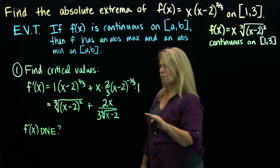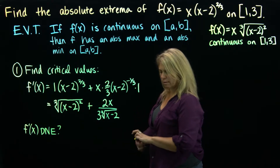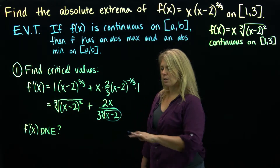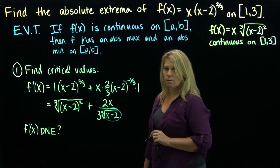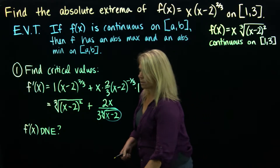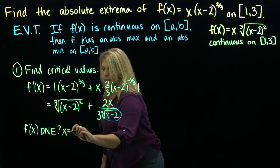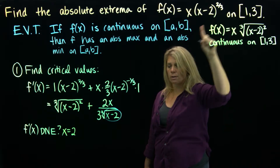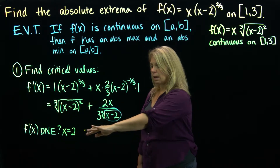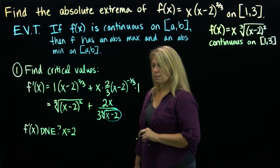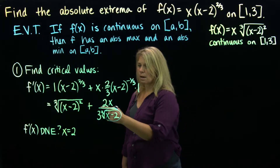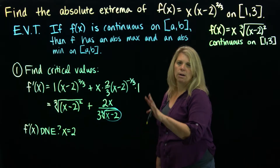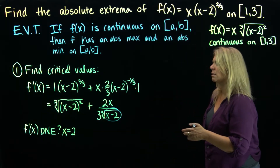Looking at this derivative, the denominator would be 0 when x equals 2. So that's a place where the derivative does not exist. That value is in our interval from 1 to 3, so it's a relevant point — a critical point where the derivative does not exist. The other critical points will come from where the derivative equals 0, so we need a little space to work that out.